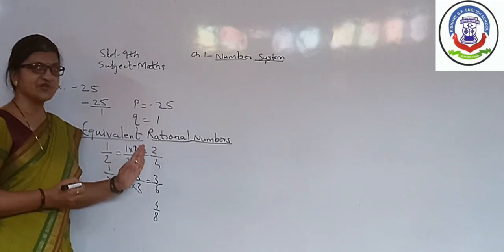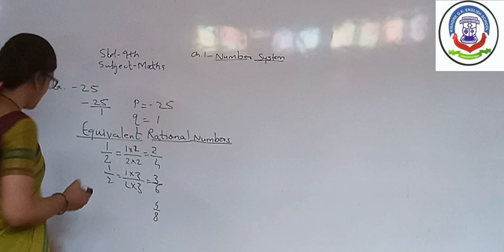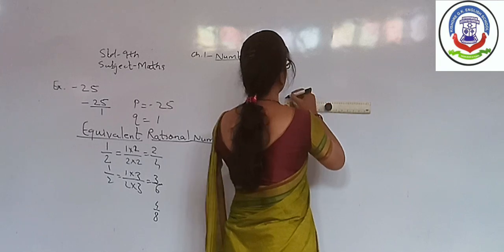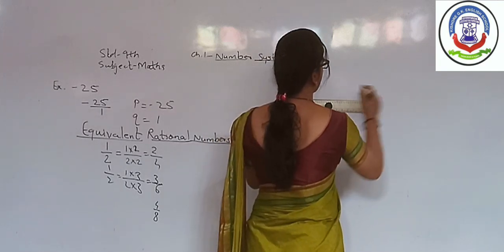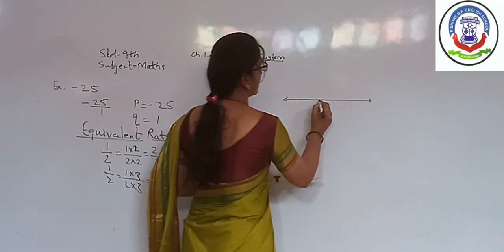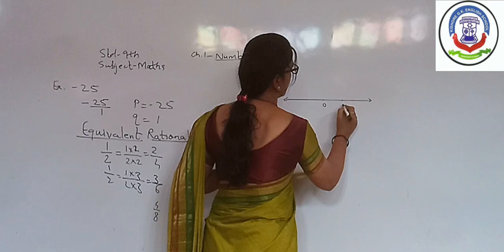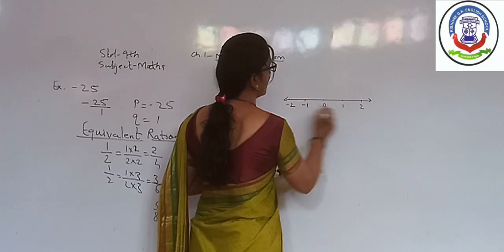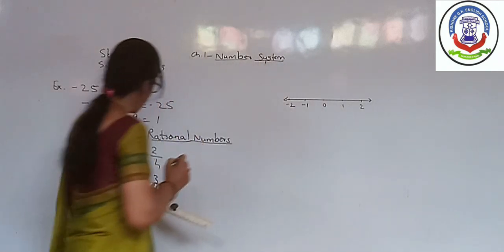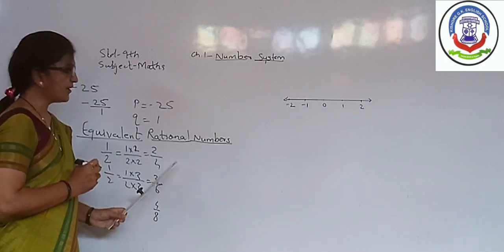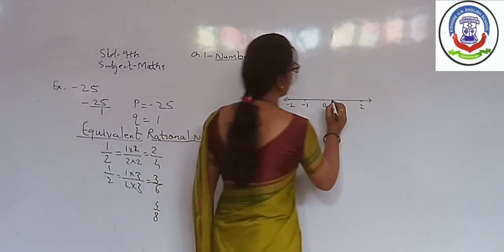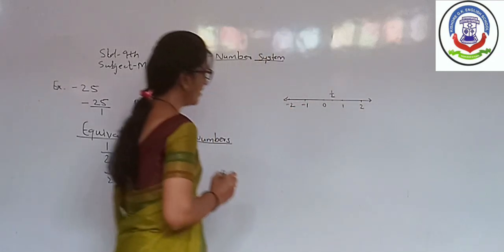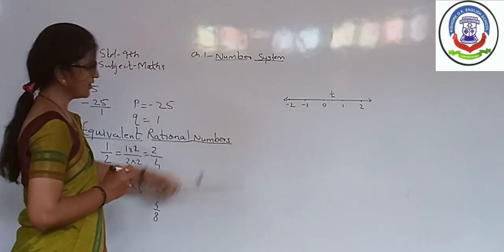If we want to represent the equivalent rational numbers on number line, we will represent it on the same point on the number line. This is 0, 1, 2, minus 1, and minus 2. All these points: 2 by 4, 3 by 6, 4 by 8, all represent half. So we will represent it here. All equivalent rational numbers are represented on the number line in this way.